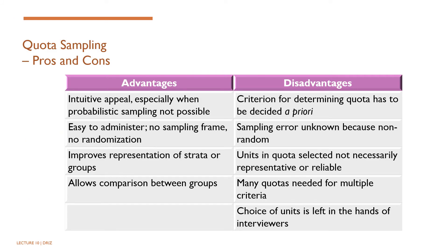Among the advantages of quota sampling is that it has intuitive appeal, especially if proportional quotas are used. It is particularly useful when you are unable to obtain a probability sample, but you are still trying to create a sample that is as representative as possible of the population being studied. In this respect, it is the non-probability-based equivalent of the stratified random sample. It is also easier to administer. Quota sampling does not require a sampling frame and the strict use of random sampling techniques. This makes quota sampling popular in undergraduate and master's level dissertations where there is a need to divide the population being studied into strata or groups. It also improves the representation of particular strata or groups within the population, as well as ensuring that these strata are not overrepresented. The stratification of a sample allows us to more easily compare these groups.